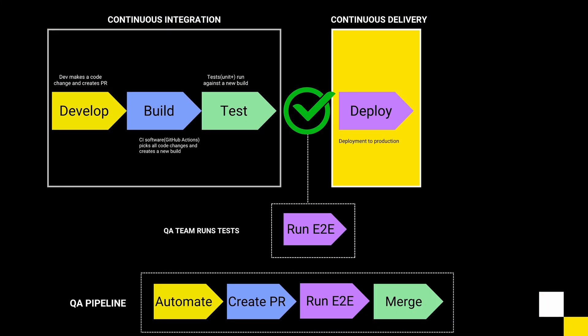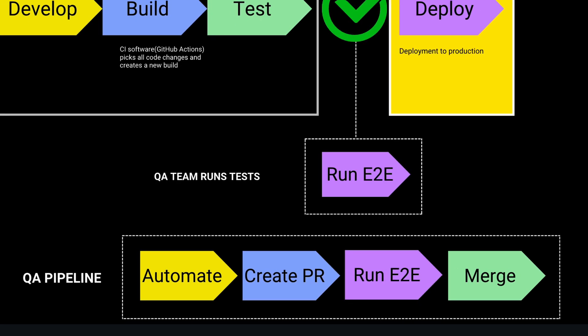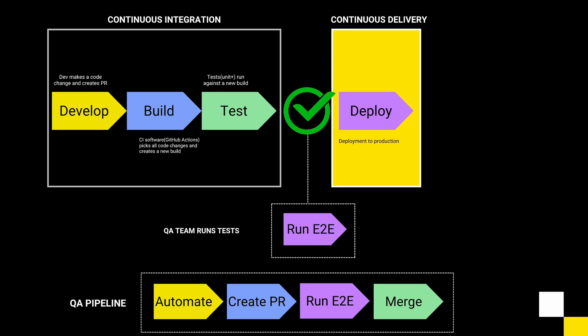Aside from that, you should also know that there will be QA pipelines which are not directly related to CI/CD. These run separately and look like this: the QA engineer automates the test case, creates a pull request, runs end-to-end tests, and then the QA lead or someone else will merge that. In some cases, that can be automated to become part of the CI/CD pipeline, where it would automatically be triggered after unit tests and integration tests, and run right before the code is deployed.